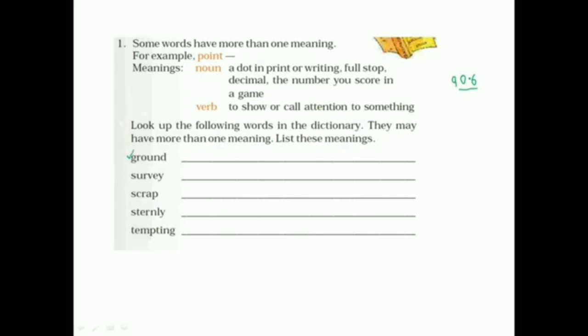Here so many words are there: ground, survey, scrap, sternly, tempting. So first one, ground. In the textbook itself, we learned about ground coconut, grind coconut, ground coconut. So as a noun, ground means surface of the earth. I am going to the ground for playing football. And the verb, past tense of grind.